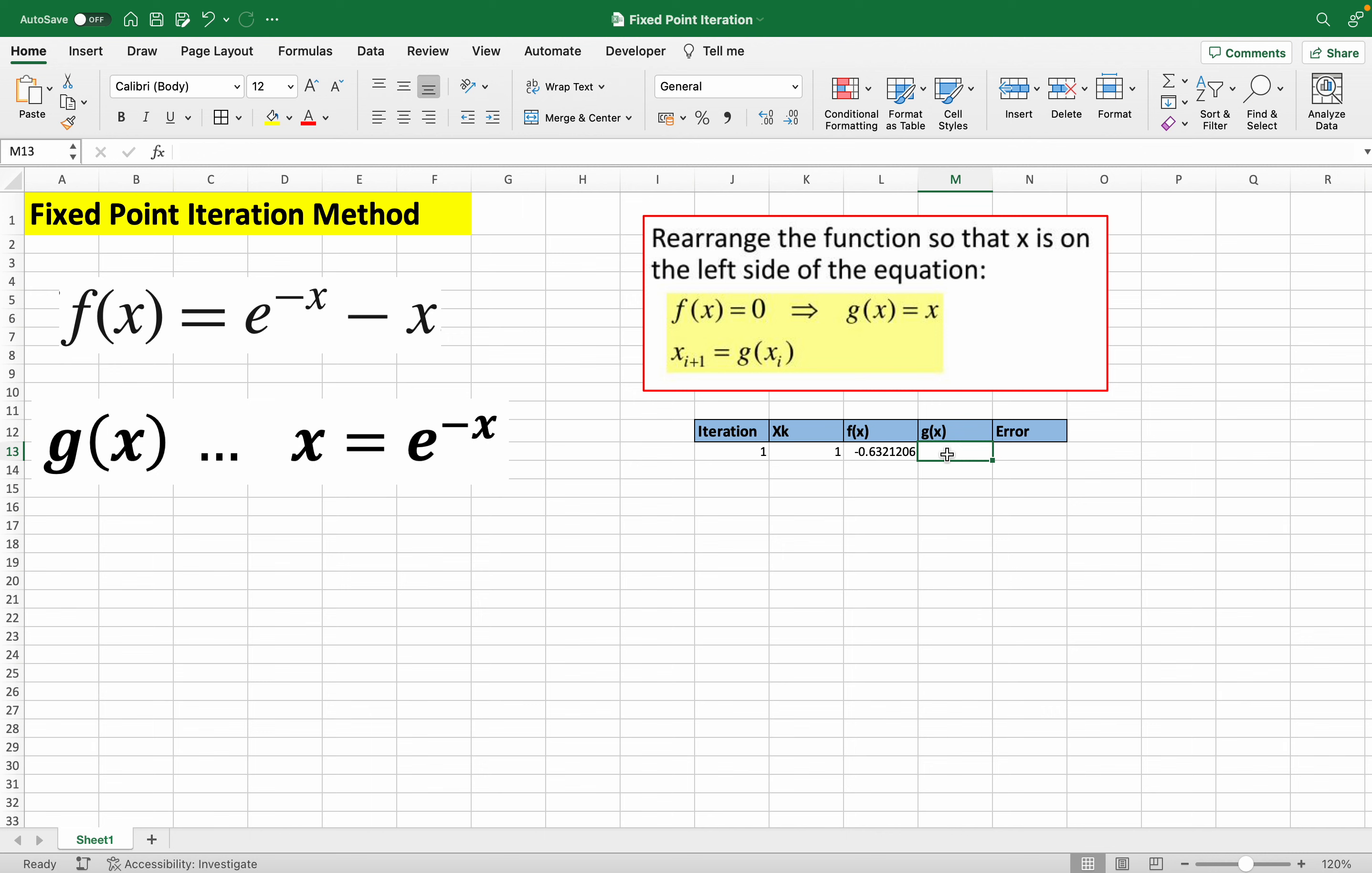For our g(x), we just use this. g(x) is x equals e negative x, so we just input the e negative x part. So it's exponent, negative x. We have no error yet, so we leave this blank.